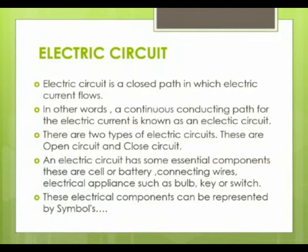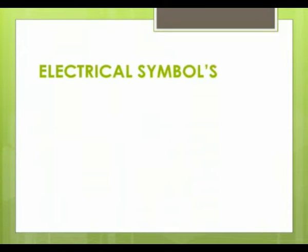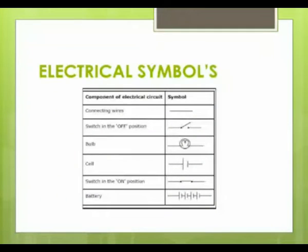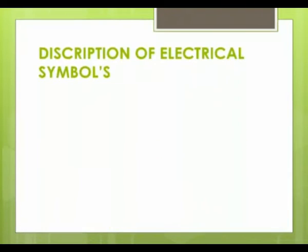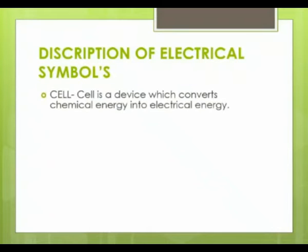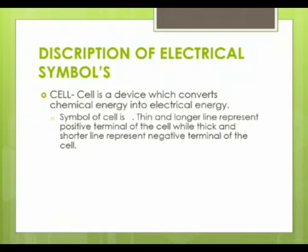These electrical components can be represented by some symbols. Here are some electrical symbols which you can see in this slide. A cell is a device which converts chemical energy into electrical energy. The symbol of a cell: a thin and longer line represents the positive terminal of the cell, while a thick and shorter line represents the negative terminal of the cell.